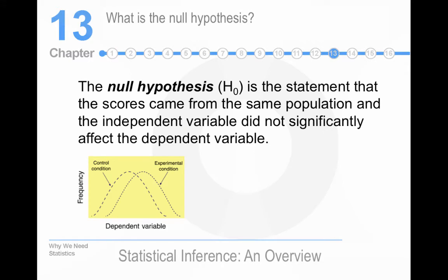What is the null hypothesis? It's a statement that scores came from the same population and the independent variable does not significantly affect the dependent variable. This is what we assume to be correct until we can prove otherwise.